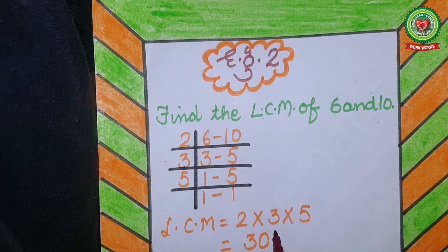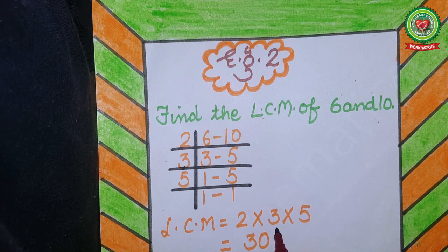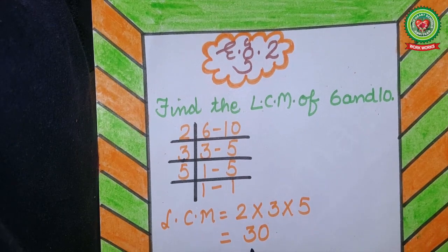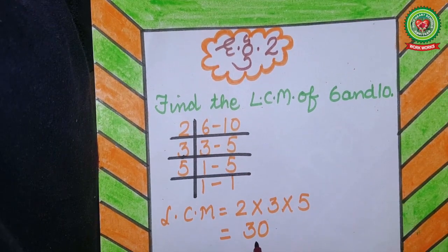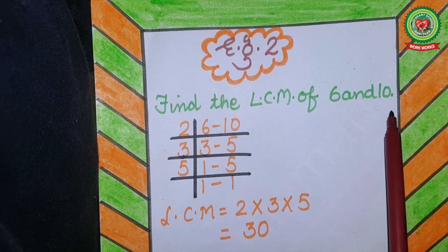So LCM is equal to 2 multiplied by 3 multiplied by 5. Now multiply: 2 threes are 6, and 6 fives are 30. So 30 is the LCM of 6 and 10.